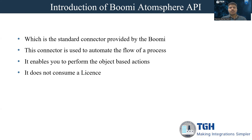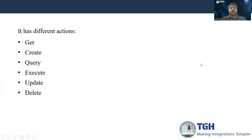Because the Boomi AtomSphere API has multiple objects, we can do multiple actions based on those objects. It does not consume a license — whenever this Boomi AtomSphere API is used, it won't affect the license. So we can deploy our Boomi AtomSphere API connector multiple times. The actions this Boomi AtomSphere API has are: get, create, query, execute, update, and delete.